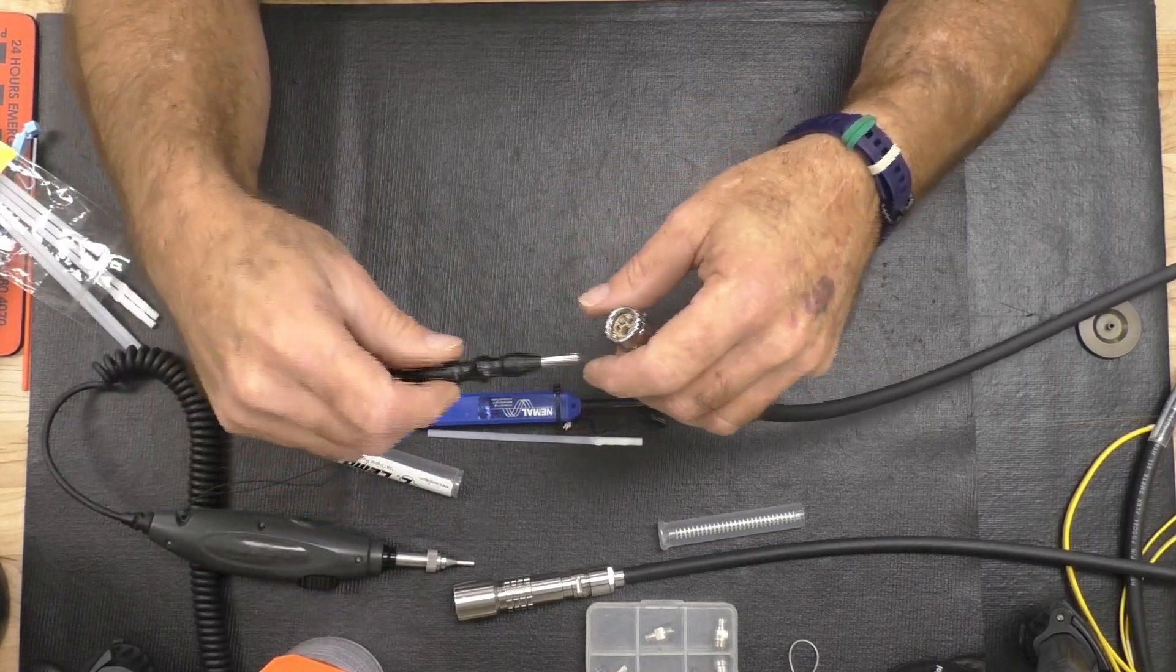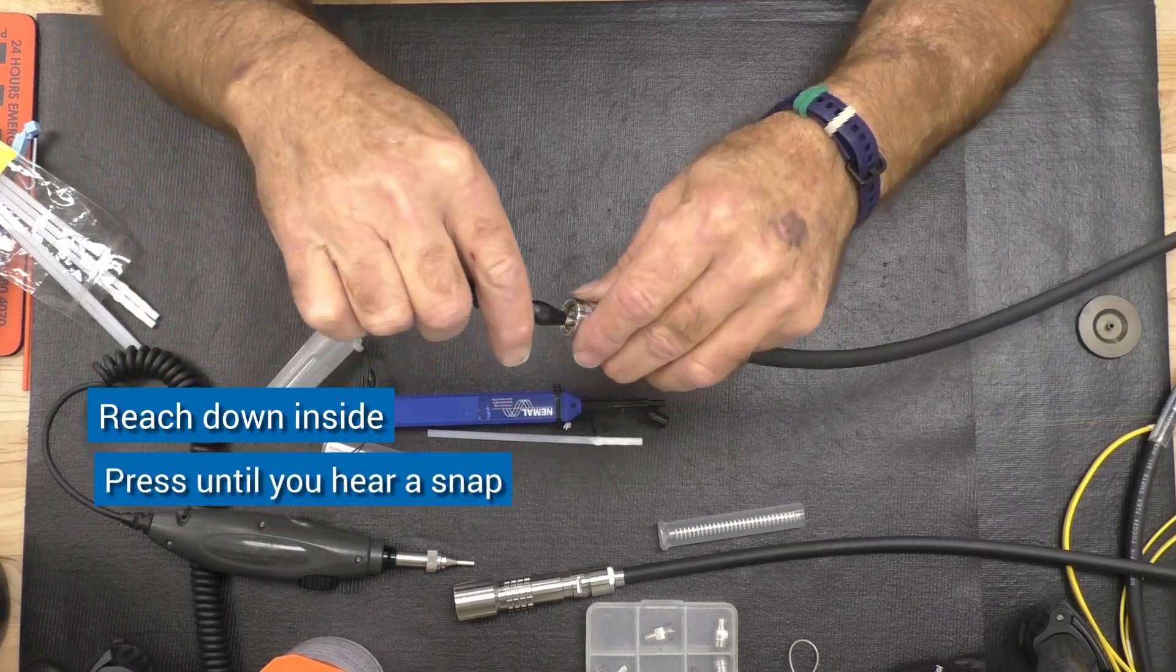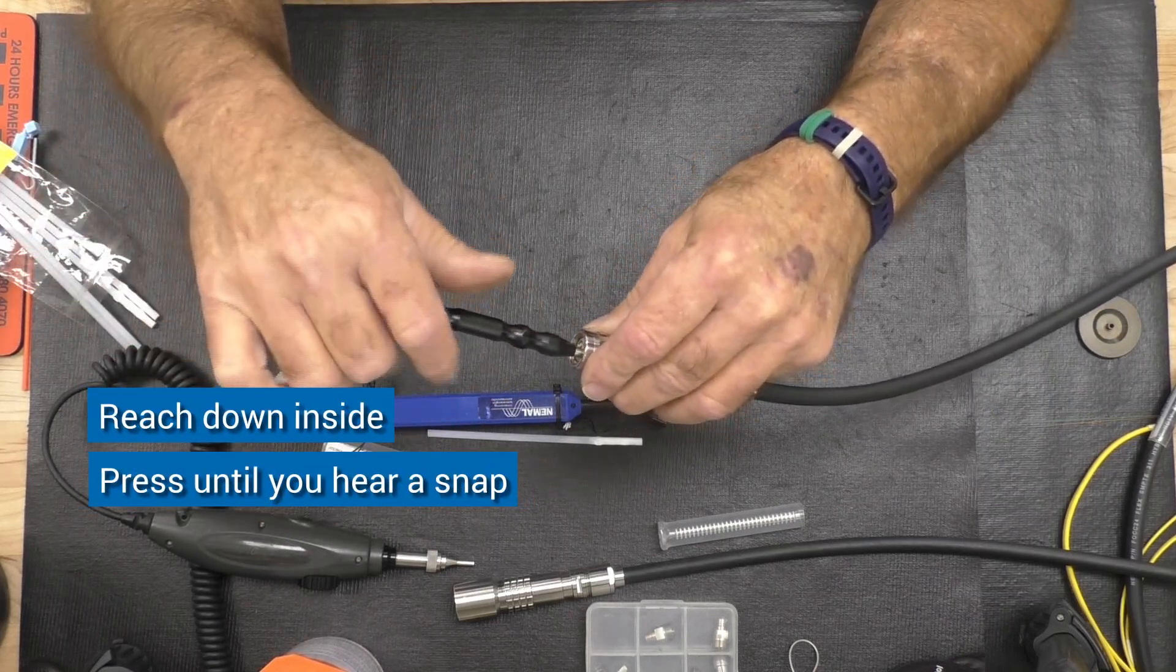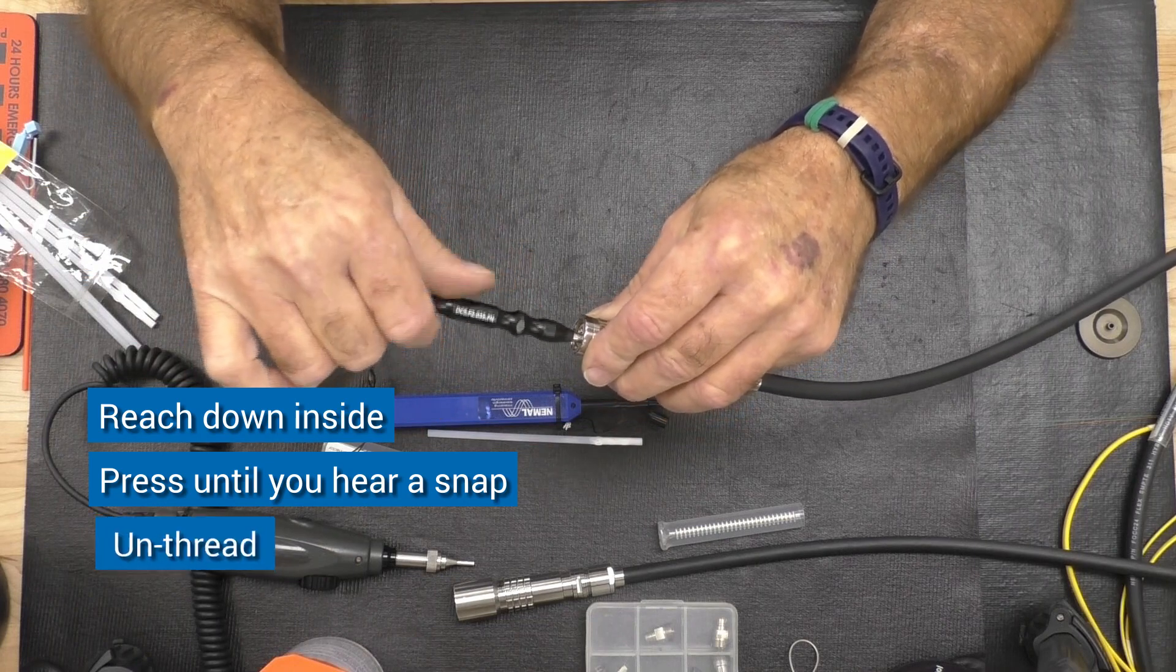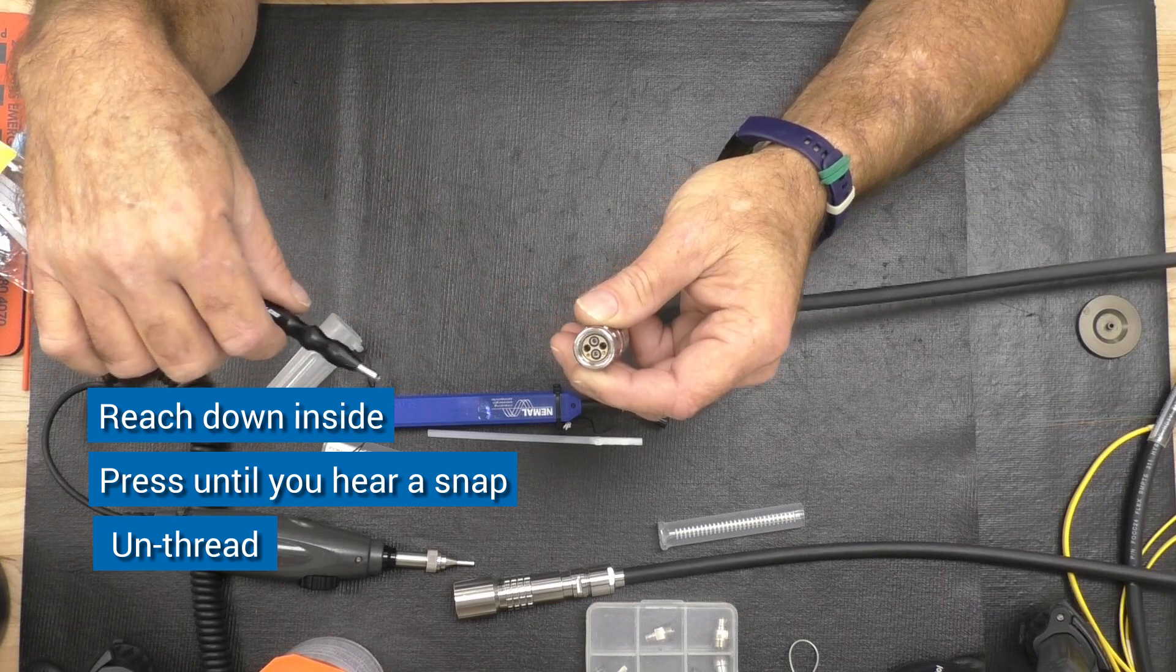To reapply the alignment sleeve, thread it on the tool, reach down inside, and press until you hear a snap. It's a pretty positive snap. Then unthread the tool, and the alignment sleeve is put back on.